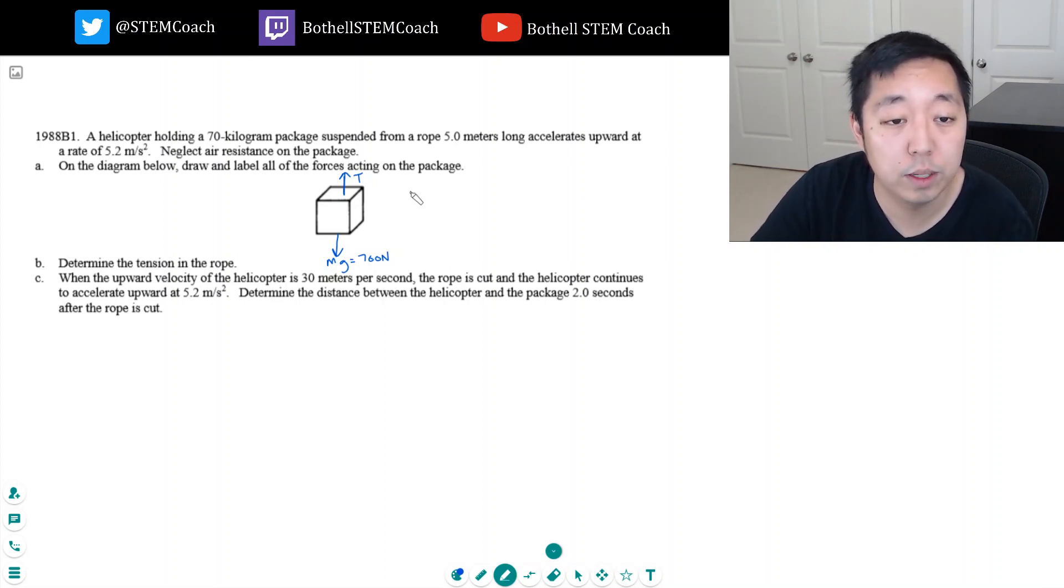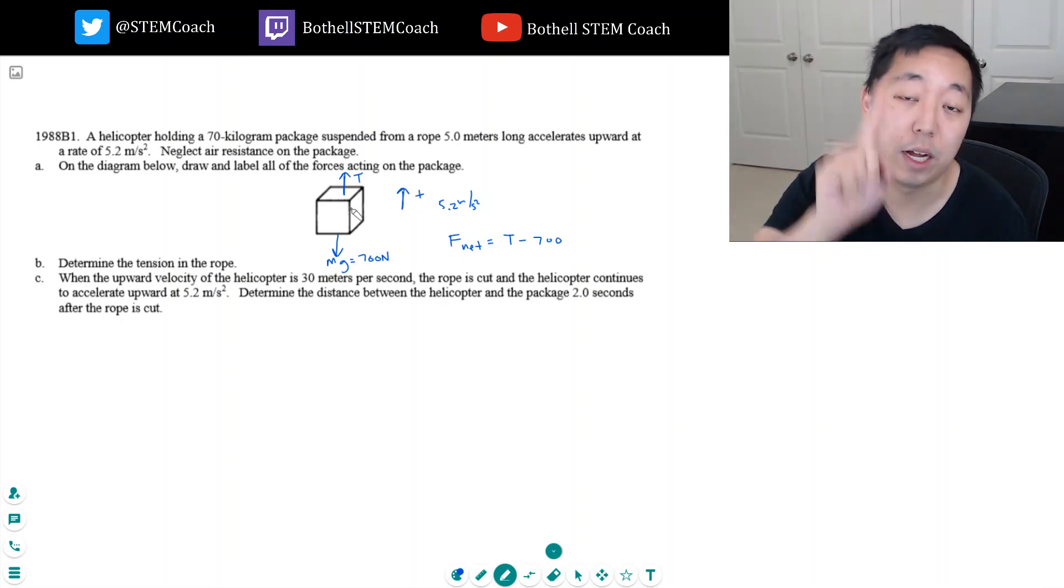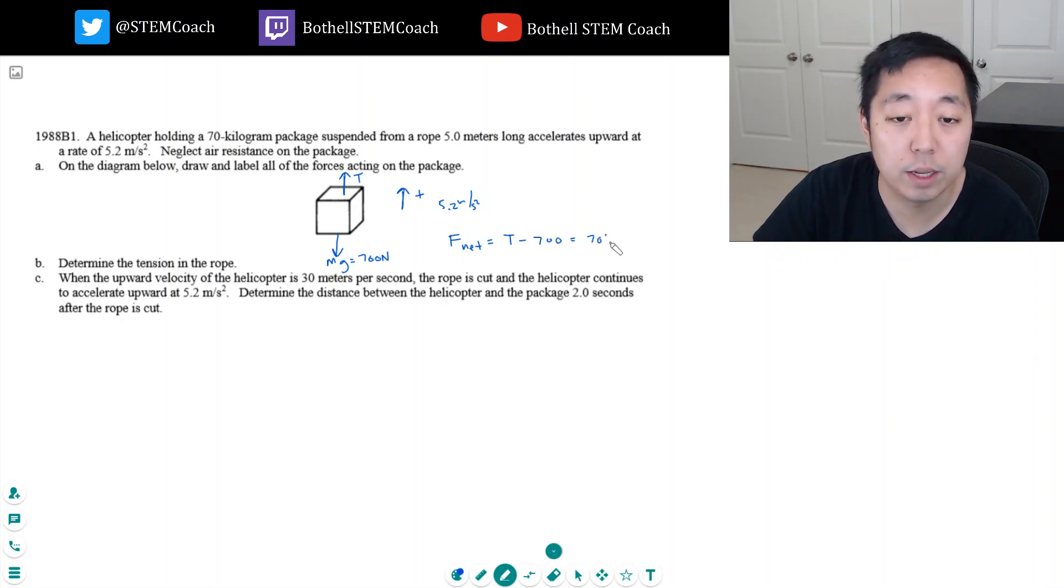Determine the tension in the rope. Well, we know that it's accelerating upward at 5.2 meters per second squared, so the net force on this has to equal m times acceleration. So let's do our net force equation. F_net equals T minus 700. I'm saying upwards is positive since he's accelerating upwards, and that equals ma, which is 70 kilograms times 5.2 meters per second squared. This is f equals ma.